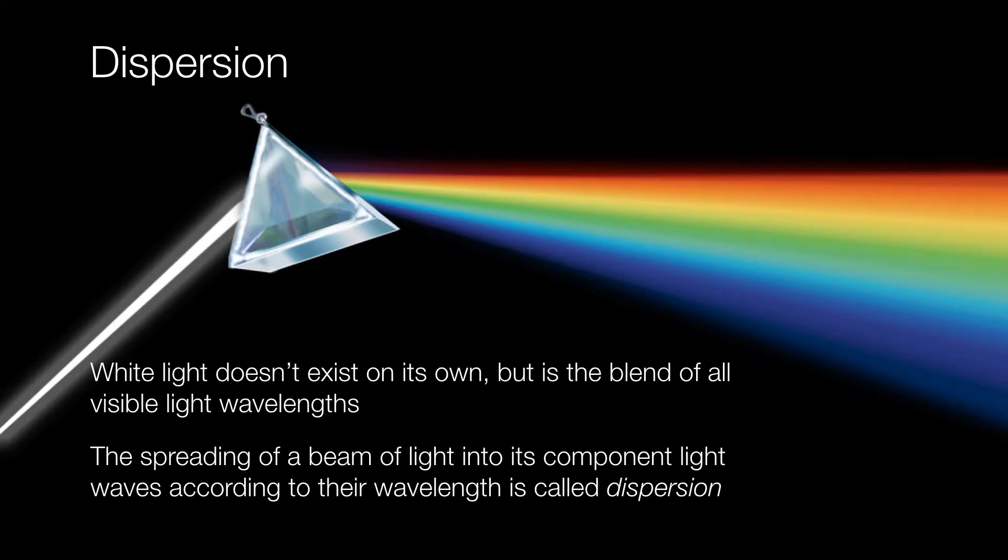Now a common misperception about light is that there's something called white light. It turns out there is no such thing as white light. White light really does not exist by itself, but instead it is composed of several component colors, all of which exist in what's called the visible part of the spectrum.